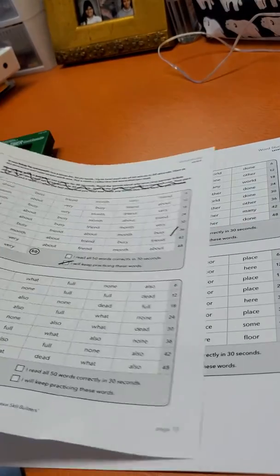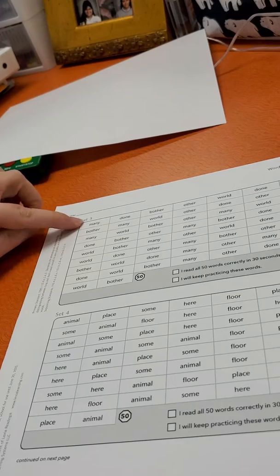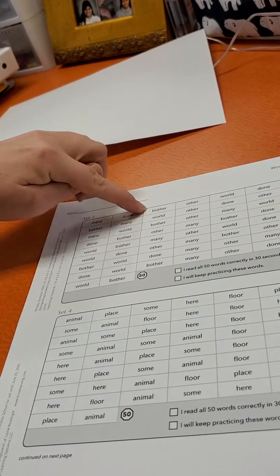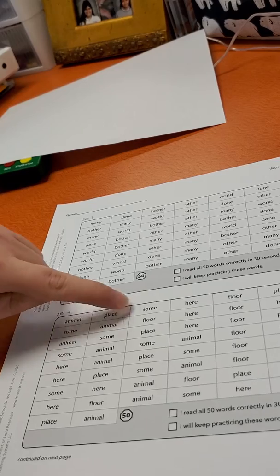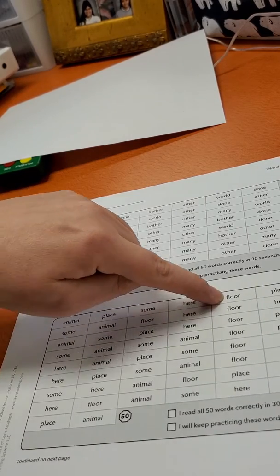Those are those words. And then page 11, many, done, bother, other, world, animal, place, some, here, floor.